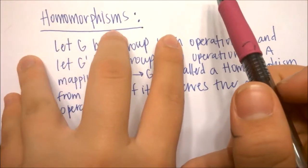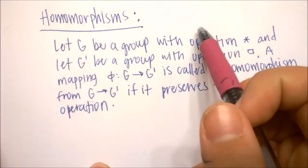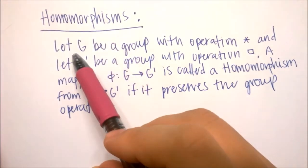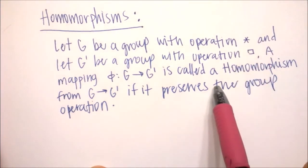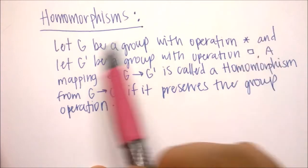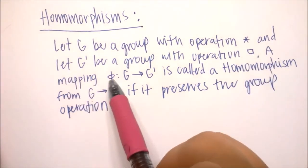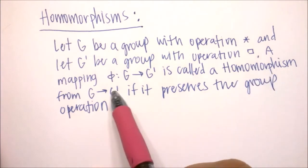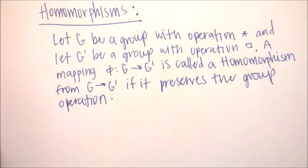In this video, I wanted to talk about homomorphisms and more specifically isomorphisms, which is a special type of homomorphism. Before we can talk about isomorphisms, we need to define what a homomorphism is. We're going to let G be a group with operation star and let G prime be a group with operation square box. A mapping phi that takes elements in G and maps them to G prime is called a homomorphism from G to G prime if it preserves the group operation.